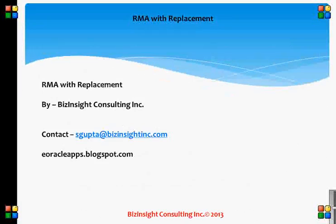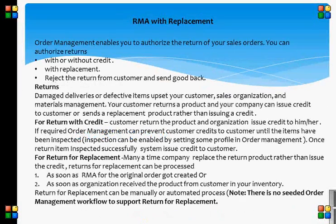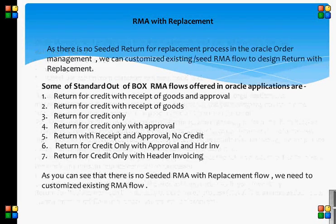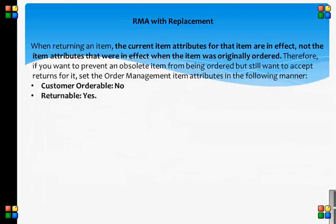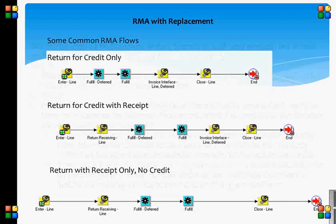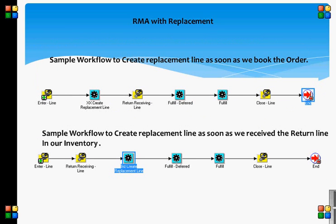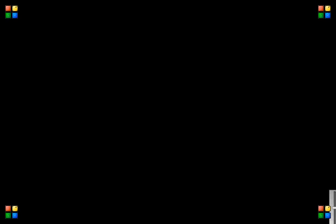As you can see in the flow, we create an RMA. The order type for RMA must be type mixed. Then we book the RMA line and wait for receiving the RMA in Oracle Purchasing. Once the RMA is received successfully, a custom process in the workflow triggers and creates an outbound line for the replacement product. If credit is issued to the customer for the RMA line, then there must be an invoicing activity in the workflow; otherwise there is no need for invoicing activity in the inbound or outbound flow.